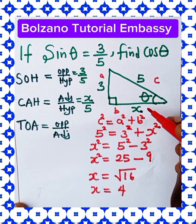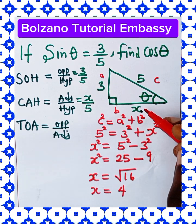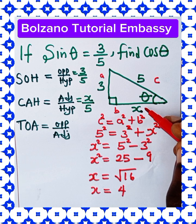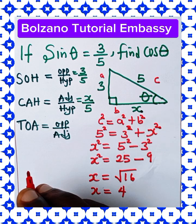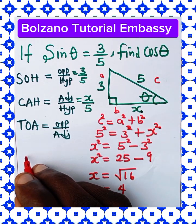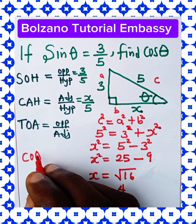Now we have found the value of the adjacent side, which is 4. So we can now determine our cosine angle, cos theta.